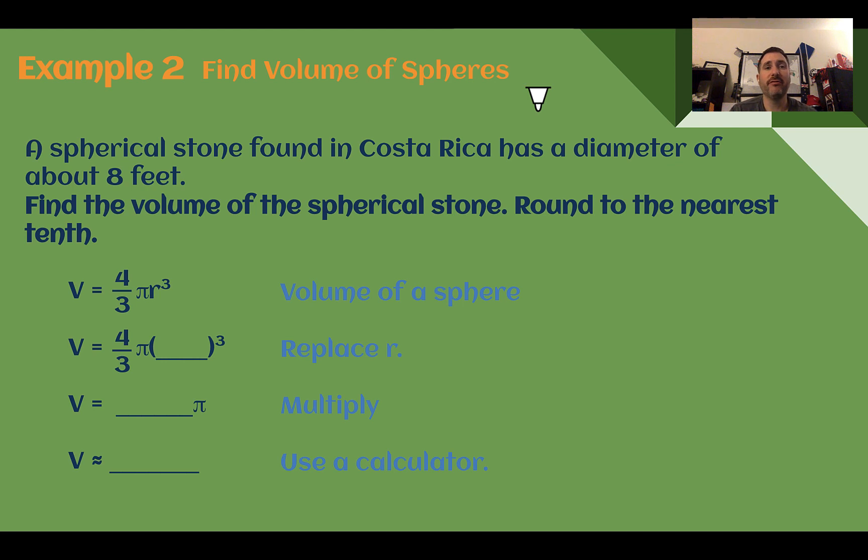Example 2, find volume of spheres. A spherical stone found in Costa Rica has a diameter of about 8 feet. Find the volume of the spherical stone, round to the nearest tenth. So let's start with our sphere formula. Volume equals 4 thirds pi r cubed. Let's plug in r. We are given a diameter of 8, which means our radius is 4.